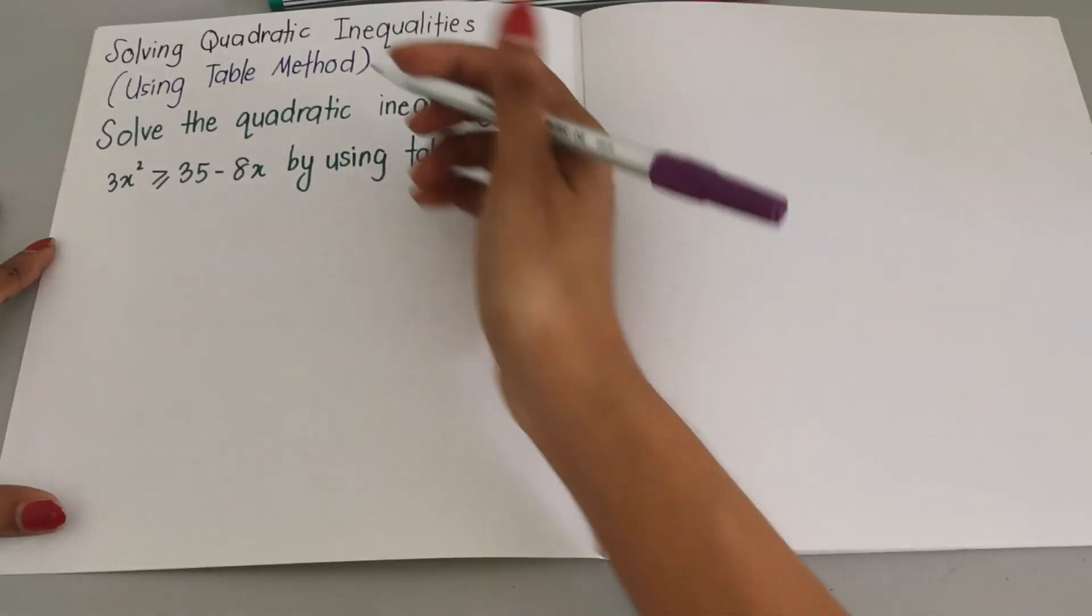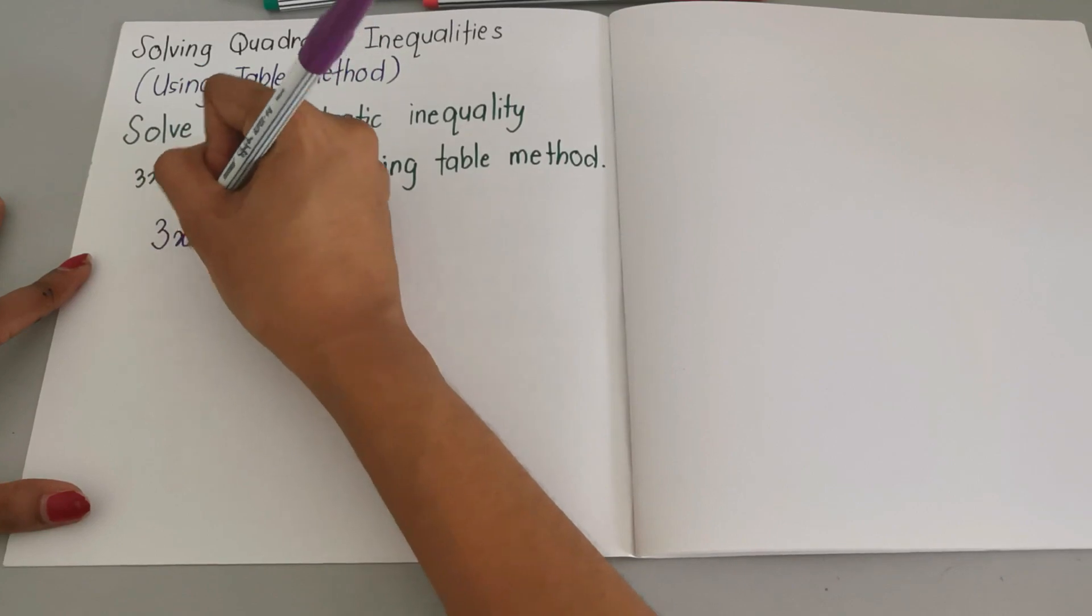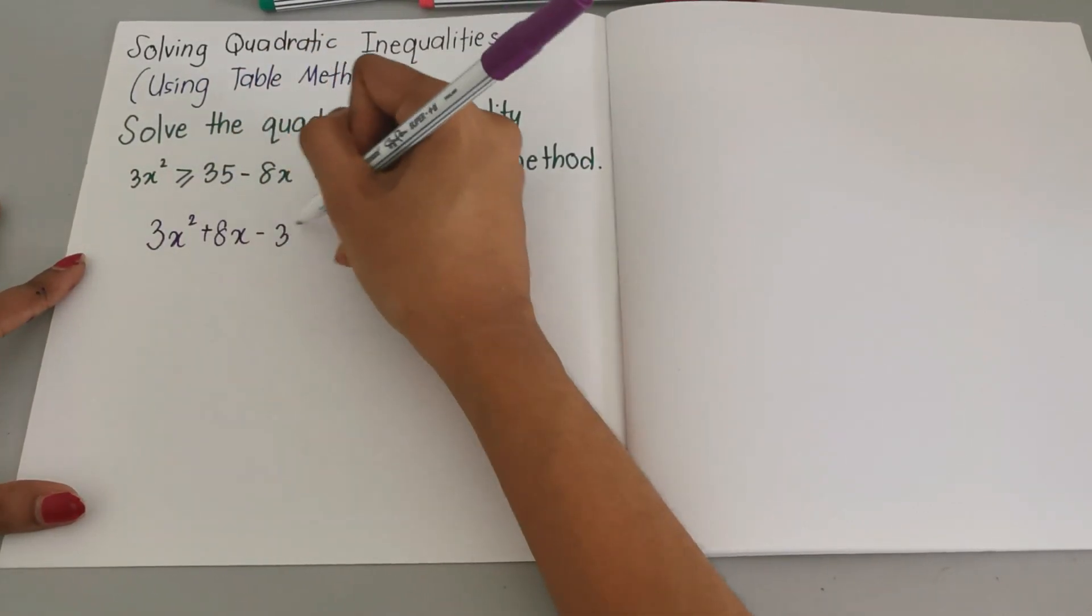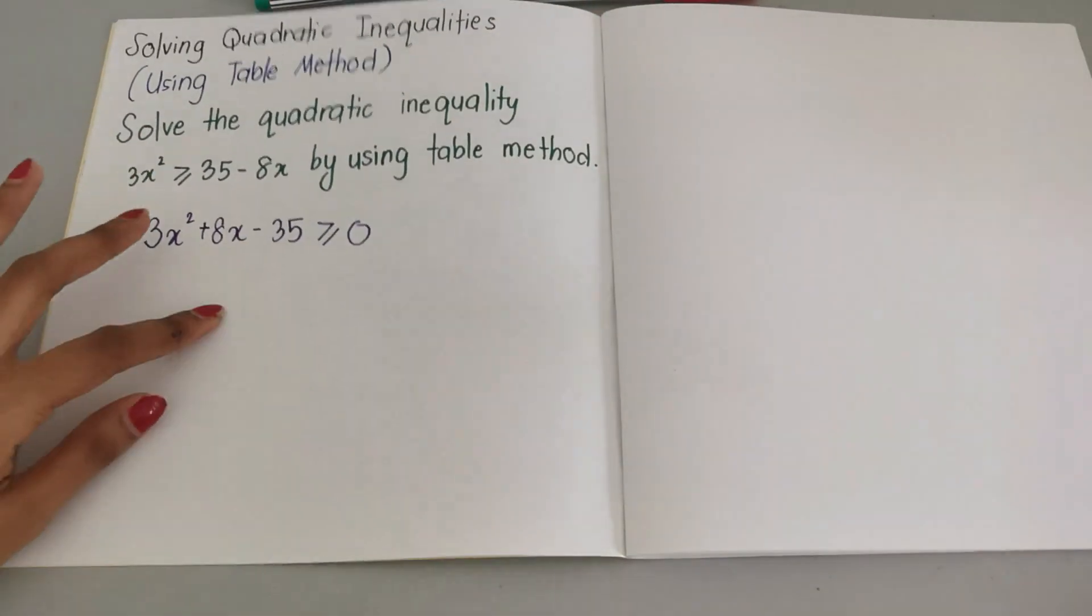I'm going to shift all this to the left so it's going to become 3x² + 8x - 35 greater than and equals to zero. Now I'm going to factorize this. You can always use your calculator to factorize.